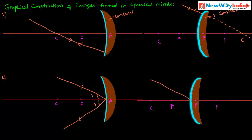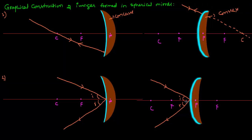In case of a concave mirror, if a ray of light is incident at the pole, after reflection it will pass obliquely such that the angle of incidence equals the angle of reflection. This satisfies the law of reflection — the incident ray and reflected ray obey the law of reflection. These are the four rules for constructing ray diagrams in the case of spherical mirrors. Thank you.